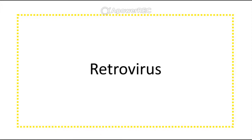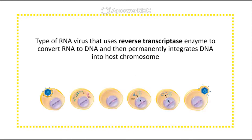Retroviruses are a special type of RNA virus in that they have an enzyme — a polymerase called reverse transcriptase. Reverse transcriptase does the opposite of what our cells do: instead of converting DNA to RNA, it converts RNA to DNA, which is why it's called reverse transcriptase. By doing so, it converts the RNA virus's nucleotides to DNA, and that DNA can be integrated into the host's chromosome.